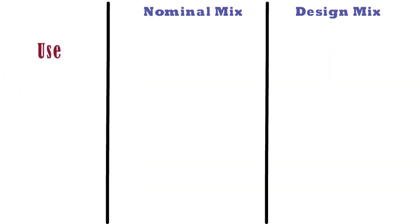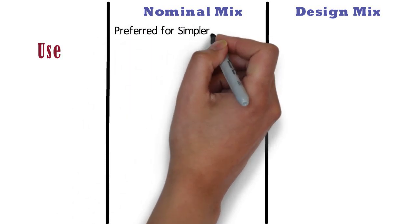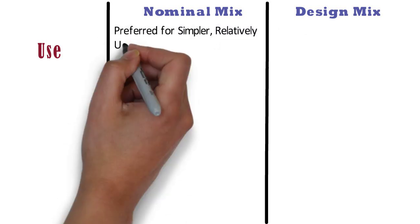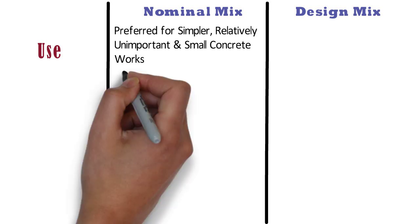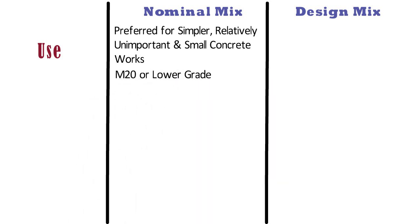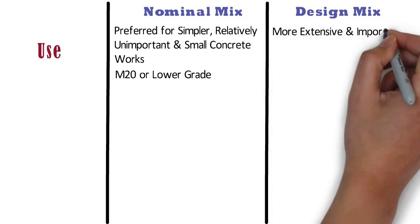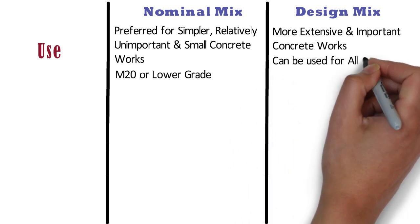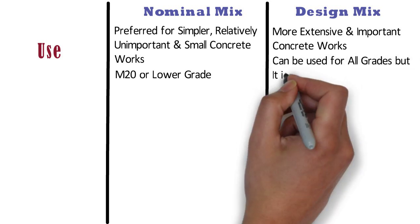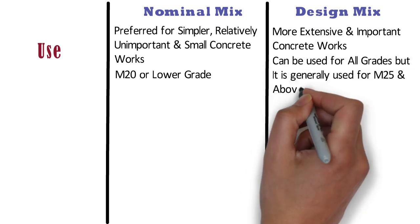Use: Nominal mix is preferred for simpler, relatively unimportant and small concrete works — in other words, for ordinary concrete work. Nominal mix may be used for concrete of M20 grade or lower grade. Whereas design mix is used for more extensive and important concrete works. Design mix can be used for all grades, but it is generally used for M25 and above.